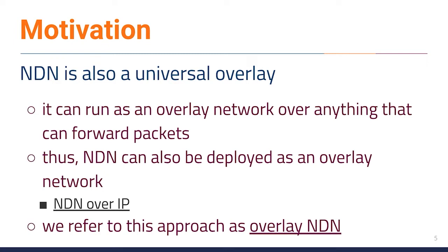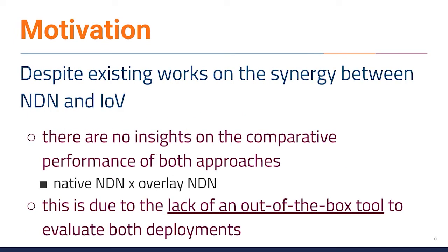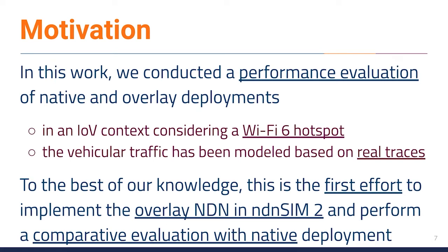In general, NDN networks in testbed experiments commonly use only the overlay NDN deployment, while proposals evaluated through simulator environments commonly use only native NDN. Despite existing works on the synergy between NDN and the Internet of Vehicles, they analyze their proposals either considering native or overlay deployment, but there are no insights on the comparative performance of both approaches. This is due to the lack of an out-of-the-box tool to evaluate both deployments. Furthermore, when modeling vehicle traffic, these works do not consider real traces from transportation authorities and use low-throughput wireless networks, which limits the comparison between different approaches.